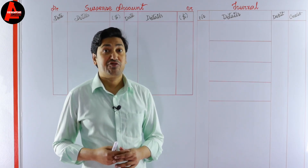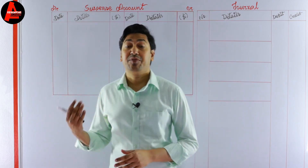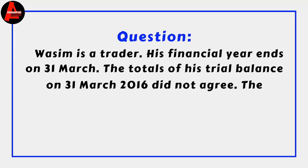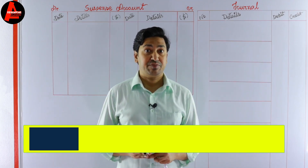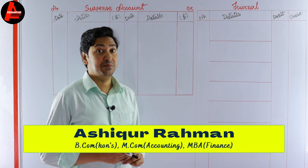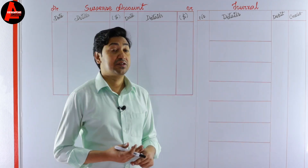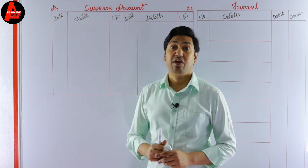We'll follow a question where we have seven transactions to rectify in the journal book, then prepare the suspense account. Wasim is a trader whose financial year ends on 31st March. The total of his trial balance on 31st March 2016 did not agree — the difference was a shortage on the debit side of 495 dollars, which was entered in a suspense account. That means on the suspense account, the debit side we record 495 dollars.